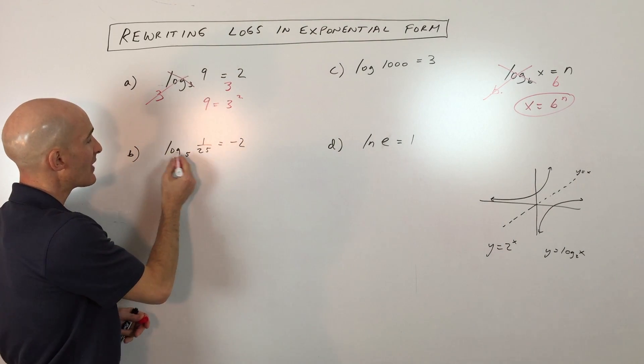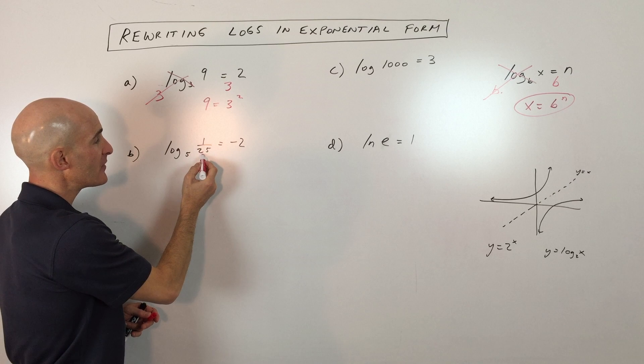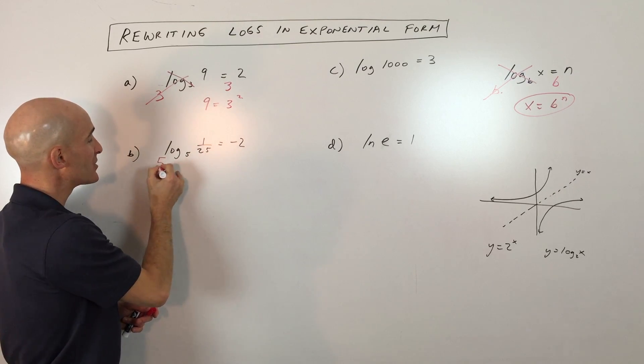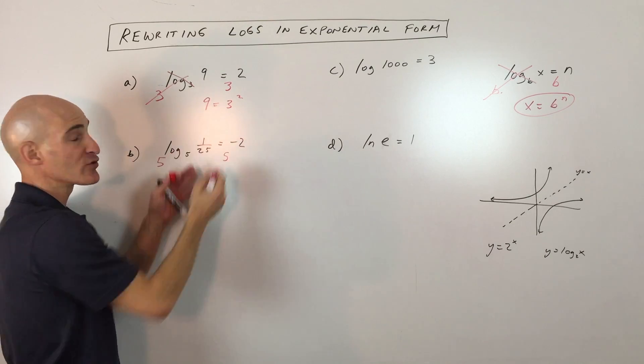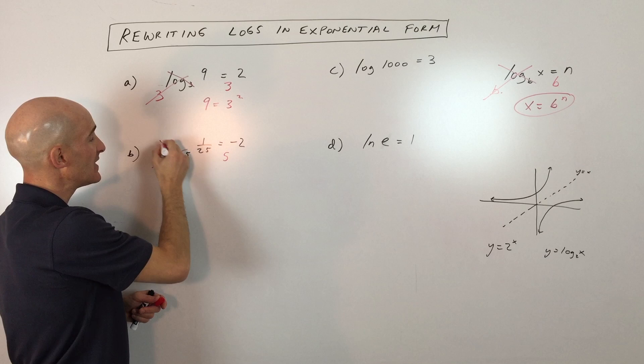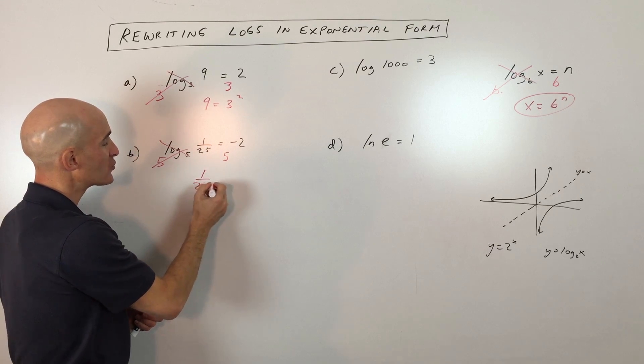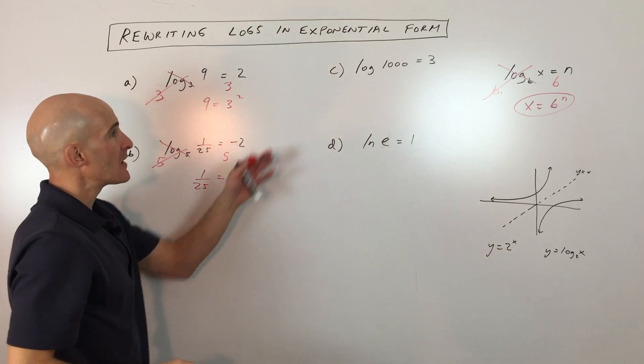Let's look at this example here. We've got log base 5 of 125 equals negative 2. So we're going to do the inverse of taking the log base 5 of this side. We're going to exponentiate or raise both sides using the base 5. This is the inverse operation and we get 125 equals 5 to the negative 2. Now I've got a few examples here.